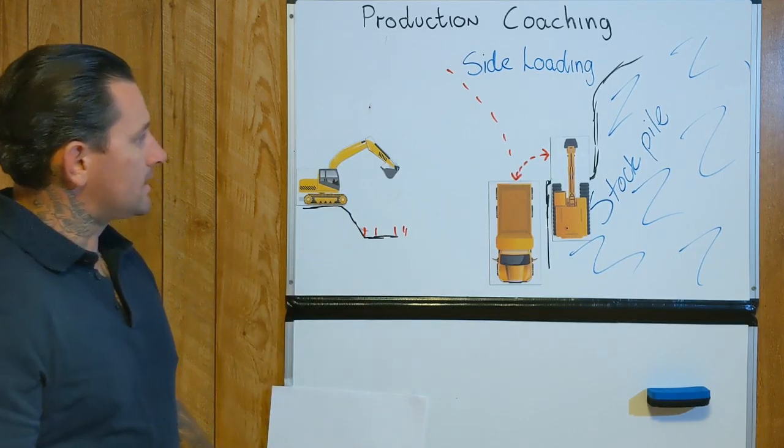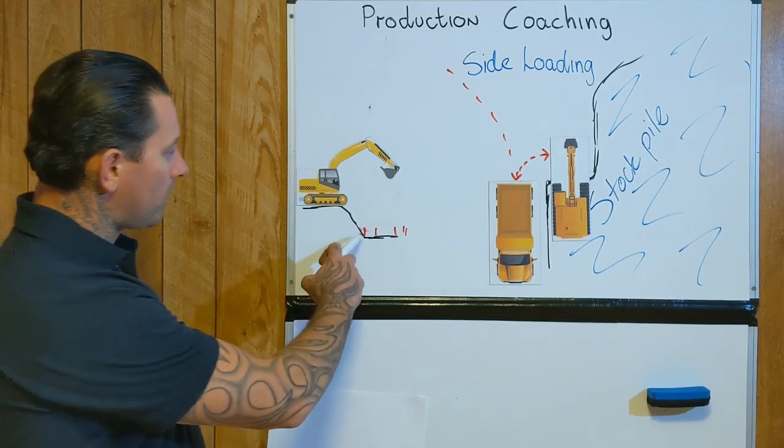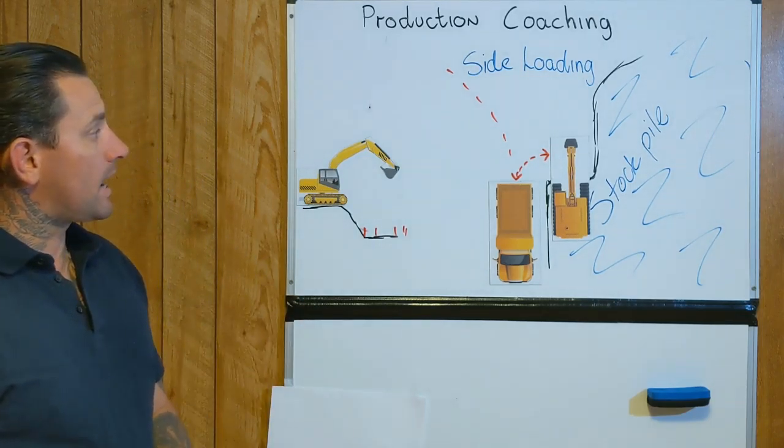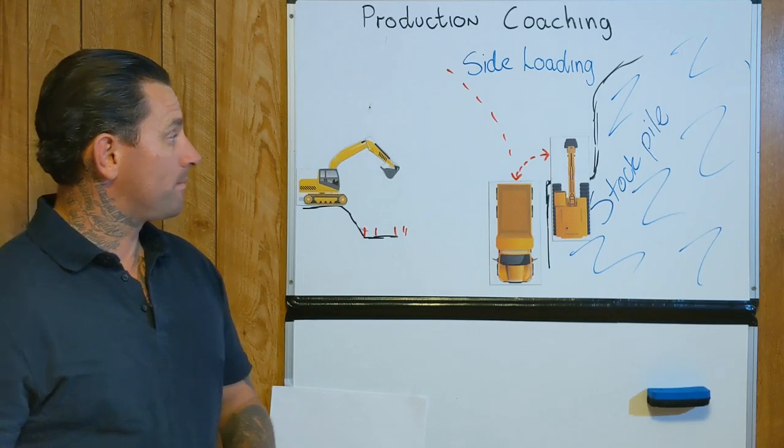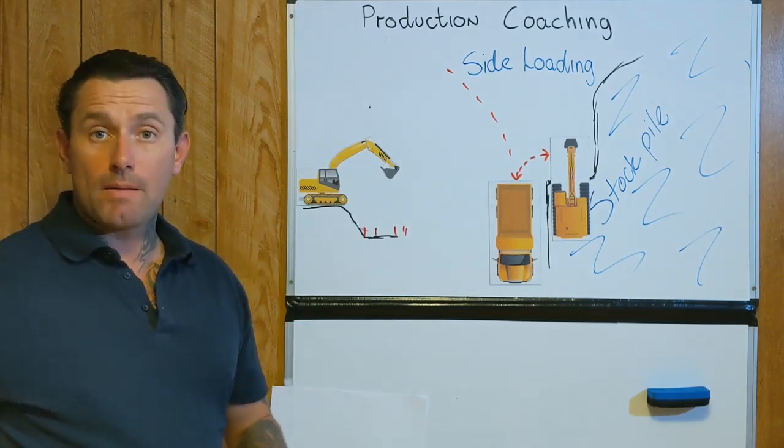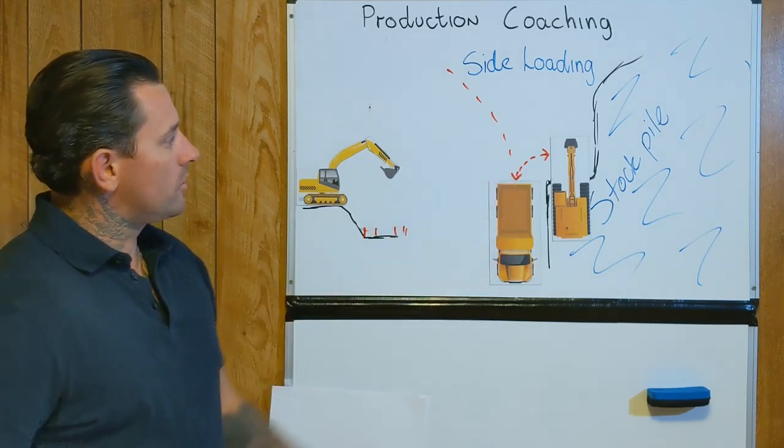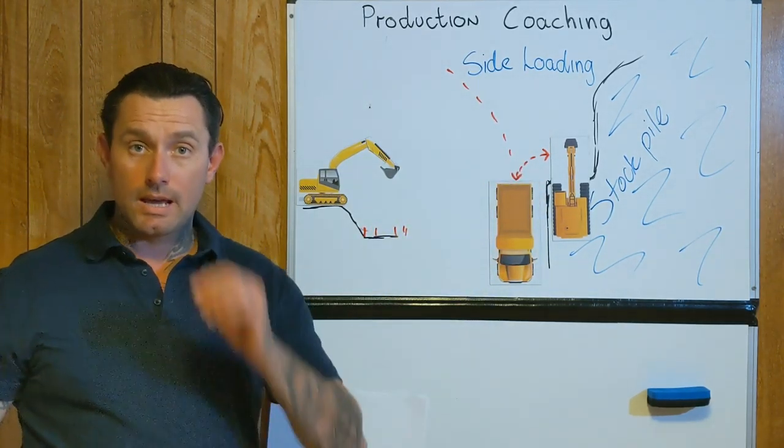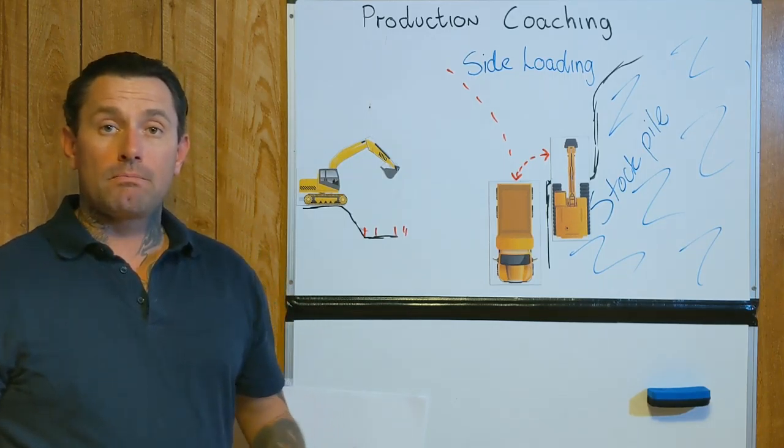So yeah, that's an example there of roughly where you'd like to try to put your machine. Another good indication is, another hint for this one, is if there's been previous trucks that have come through already and been loaded, you can actually use their tyre tracks or tyre marks. You'll see them in the ground, and they'll be pretty visible.